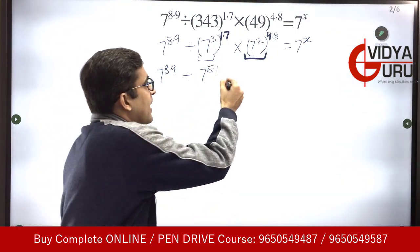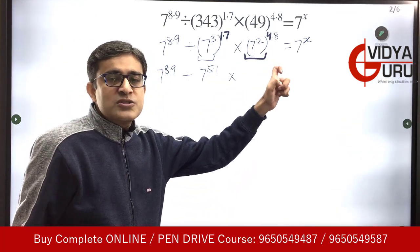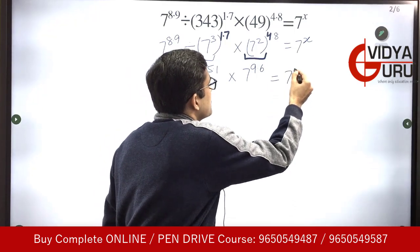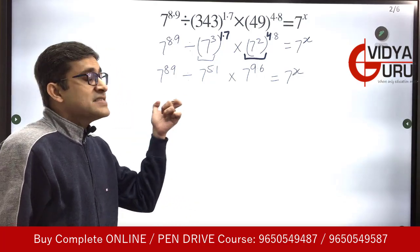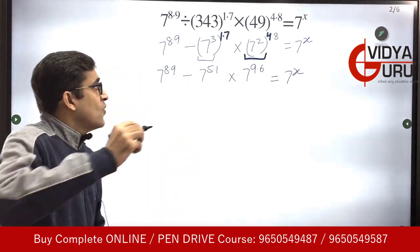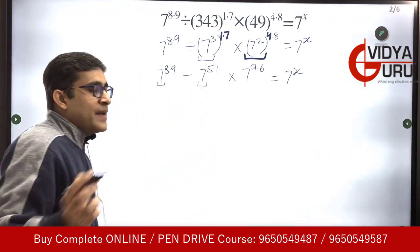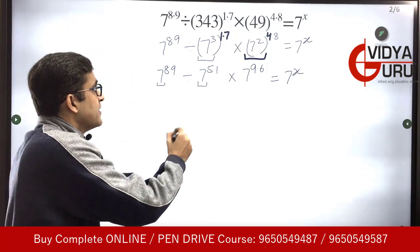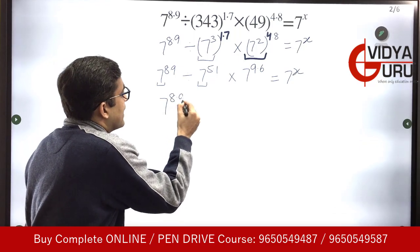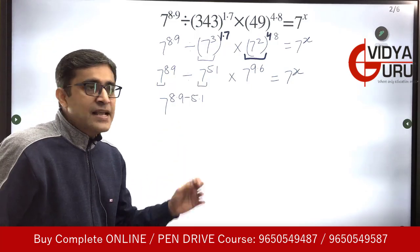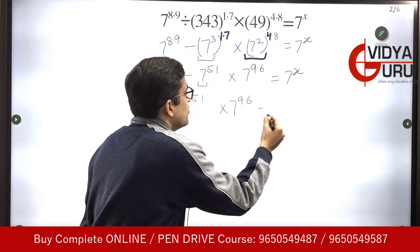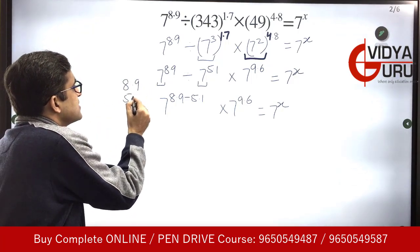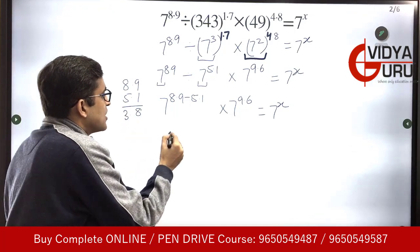The power turns out to be 5.1, and in the next term, 4 times 2's are 96, so the power turns out to be 9.6. This is equal to 7 raised to power x. Now listen carefully: the bases are the same and the terms are getting divided, so the powers will get subtracted. So it will be 7 raised to power 8.9 minus 5.1, which turns out to be 3.8.